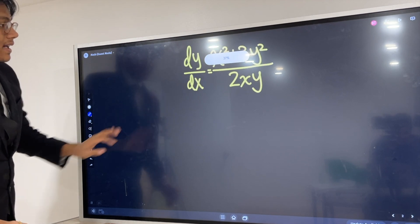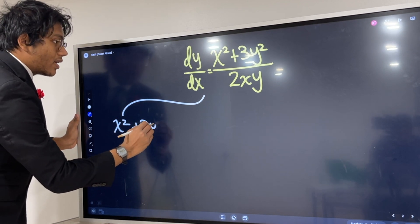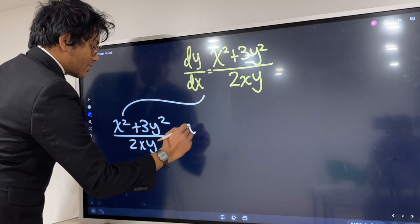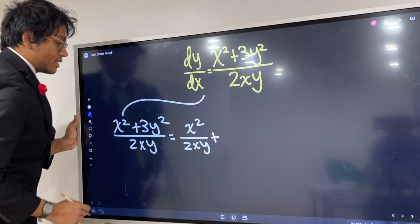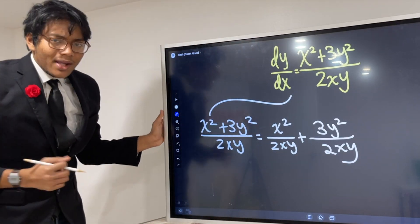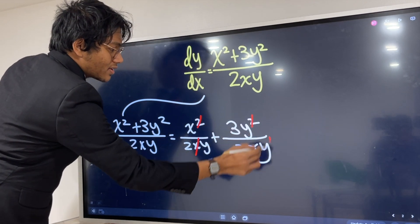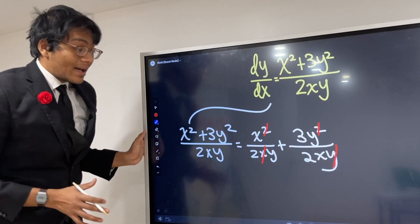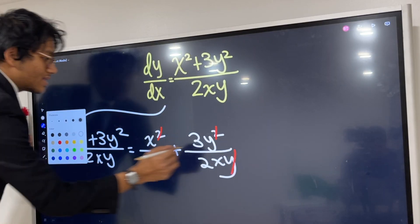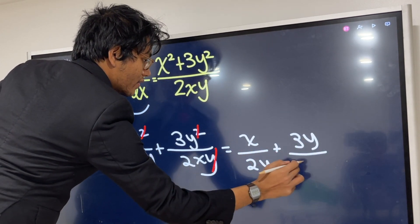We're going to rewrite x squared plus 3y squared over 2xy as a sum: x squared over 2xy plus 3y squared over 2xy. The x squared and x cancel, and the y squared and y cancel. So we end up with x over 2y plus 3y over 2x. You're going to notice that a y over x appears almost out of nowhere.